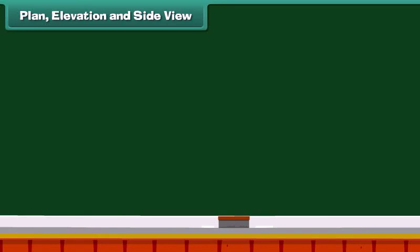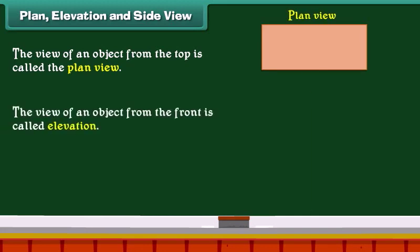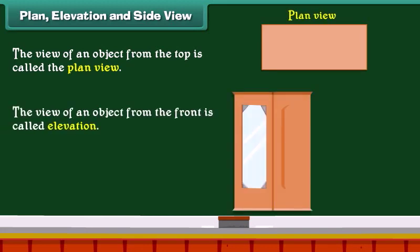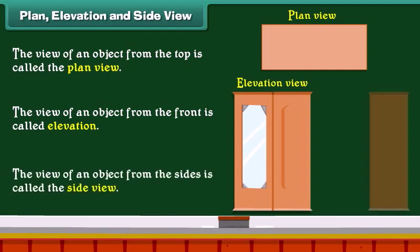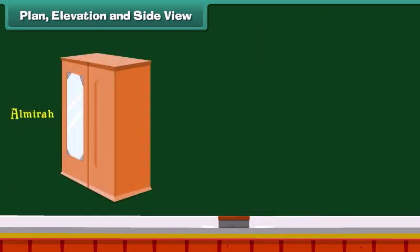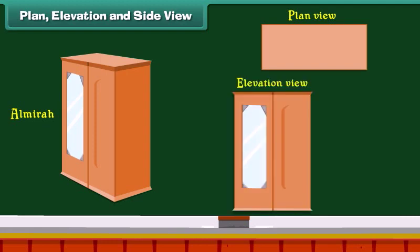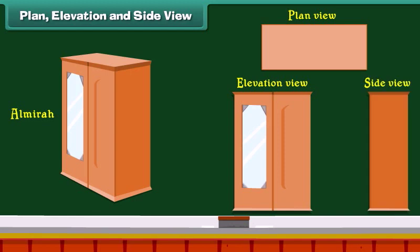The view of an object from the top is called the plan view. The view of an object from the front is called elevation. The view of an object from the side is called the side view. For example, look at this almirah — this is the plan view, this is the elevation view, and this is the side view of the almirah.